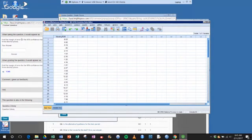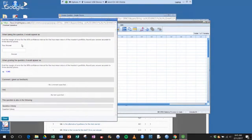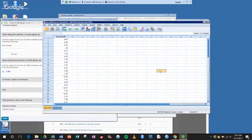Question number one says, find the margin of error for the 95% confidence interval for the true mean of the investor's portfolio. So round this to three decimal places.